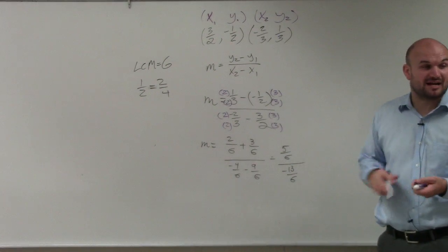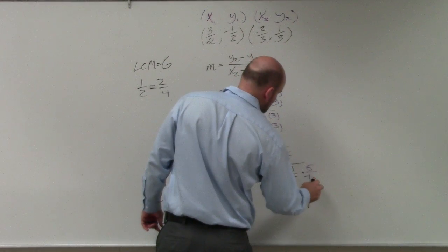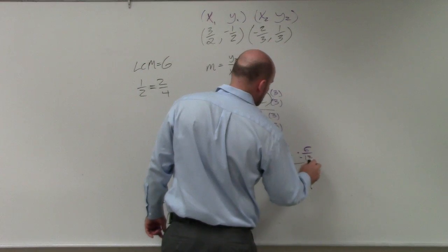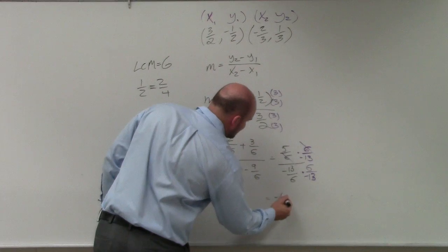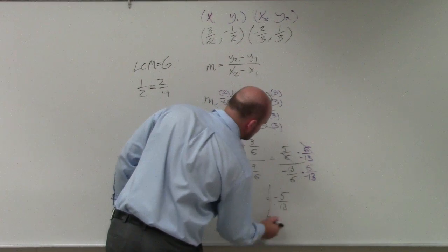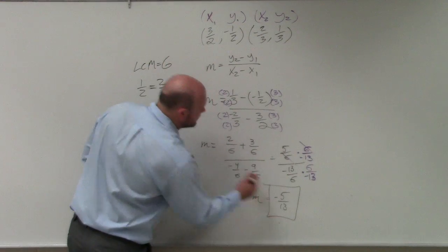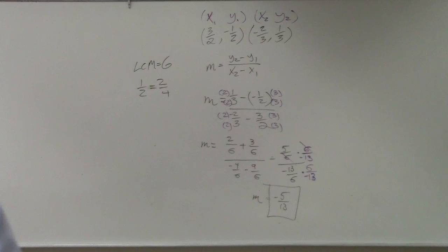Remember, whenever you have a fraction divided by another fraction, you can multiply by the reciprocal. So by multiplying by the reciprocal, my final answer is going to be negative 5 over 13. That is going to be my slope. OK? Ladies and gentlemen, I know fractions are not everybody's favorite, but there are going to be problems in this course, in this class that we're going to be dealing with.